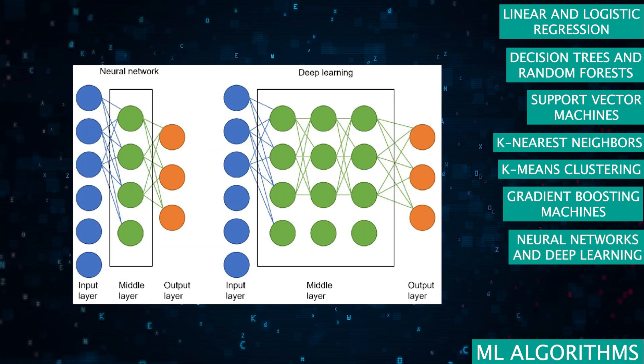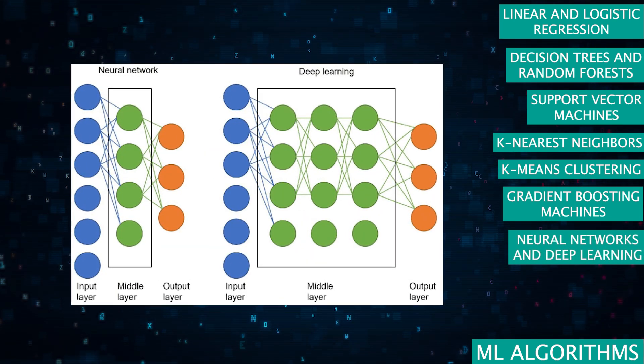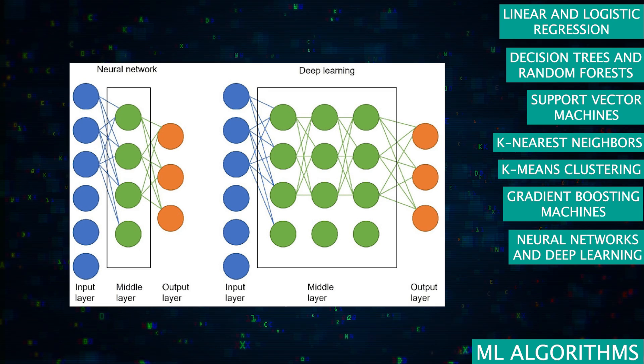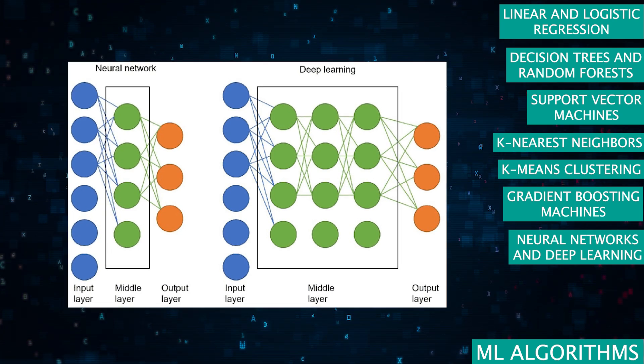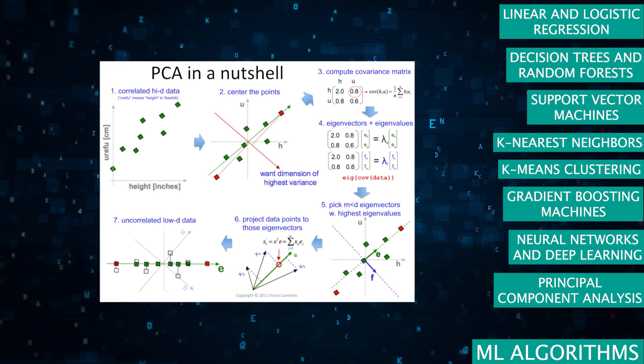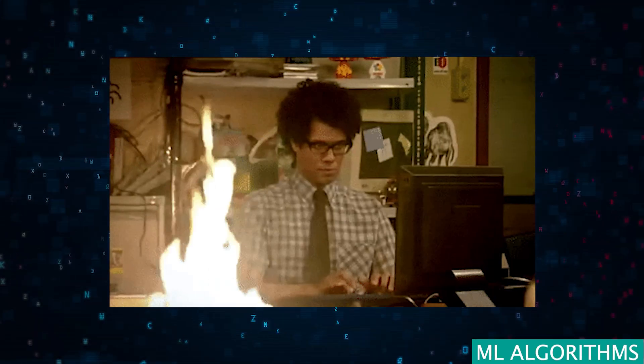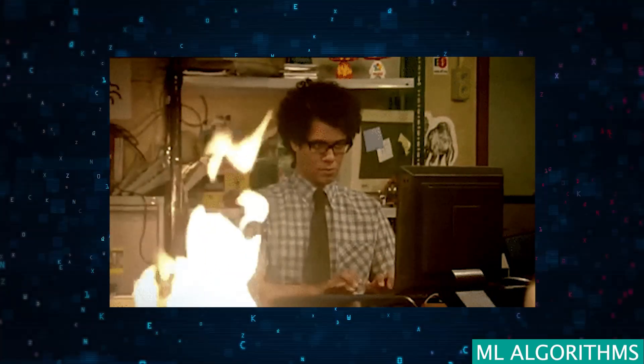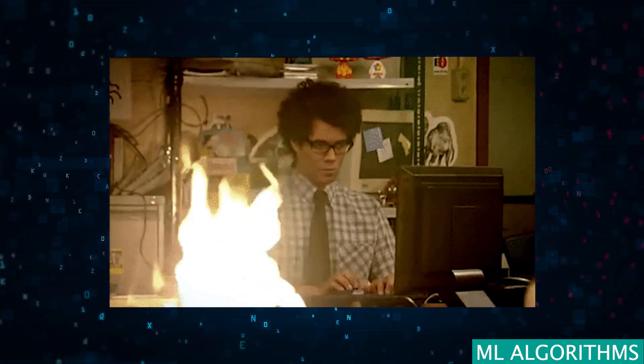Neural networks and deep learning, the backbone of modern AI, powering applications from image recognition to natural language processing. Principle component analysis, a technique for dimensionality reduction, helping to simplify complex data sets. Understanding when and how to apply these algorithms is a game changer in the field of machine learning.